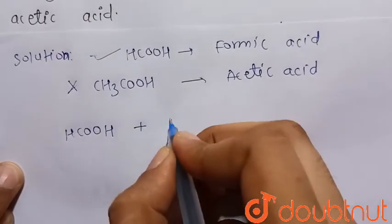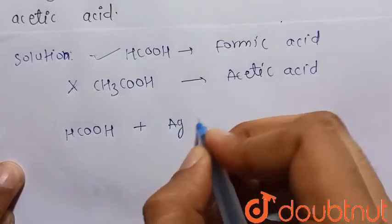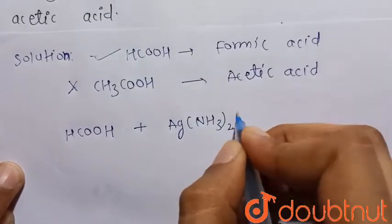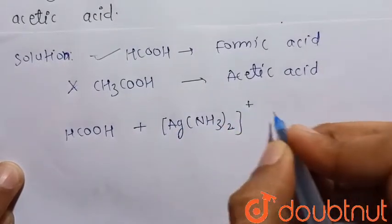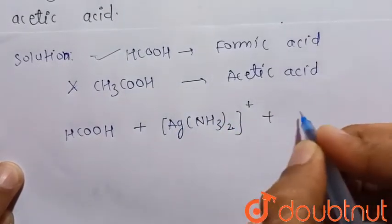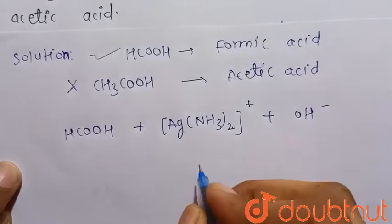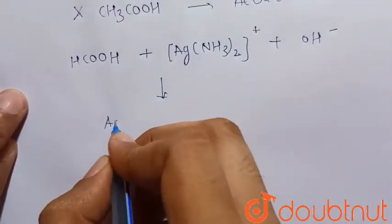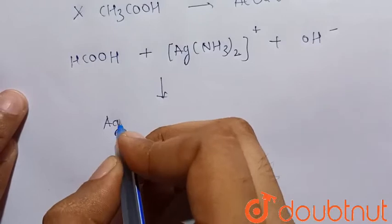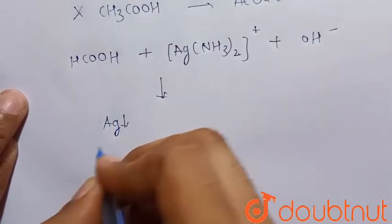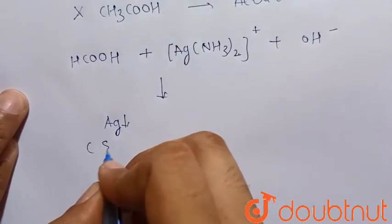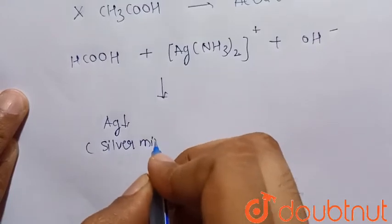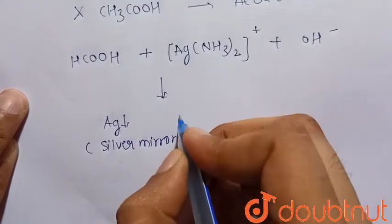When formic acid reacts with Tollens' reagent — that is [Ag(NH₃)₂]⁺ in the presence of base (OH⁻) — there is a formation of the silver mirror, that is Ag. So, Tollens' test is also called the silver mirror test.